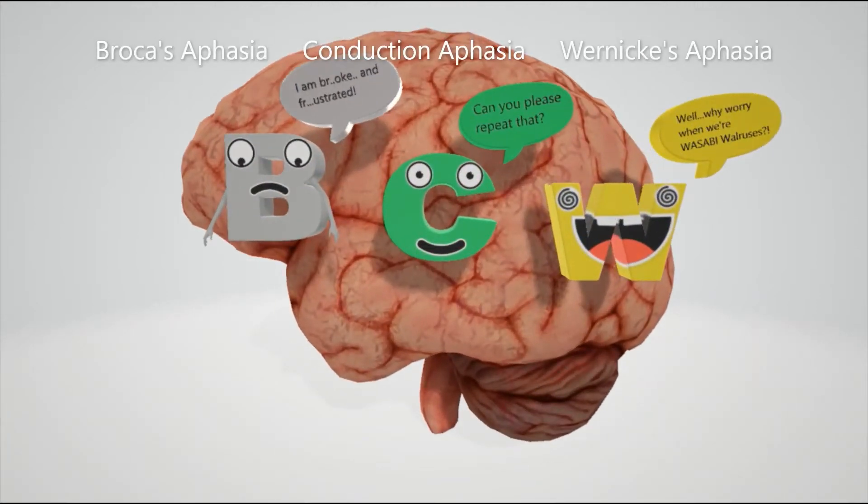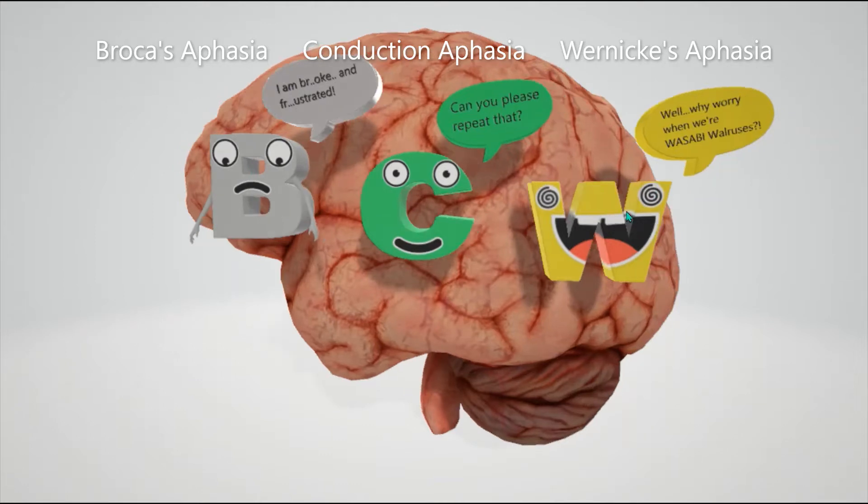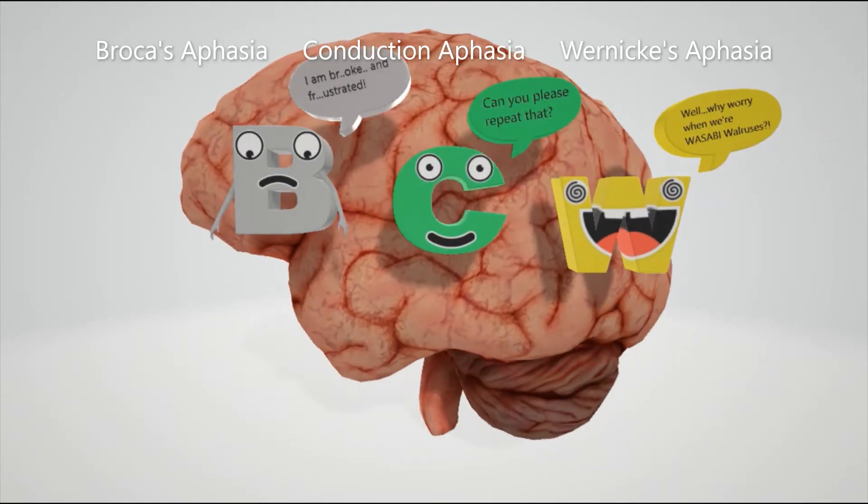Let's talk about the different types of aphasia. We're going to talk about Broca's aphasia represented by the B, Wernicke's aphasia represented by the W, and conduction aphasia represented by the C.